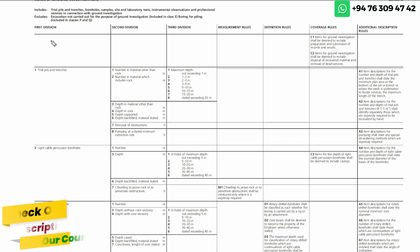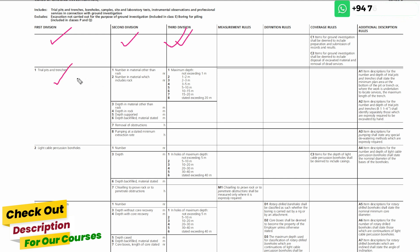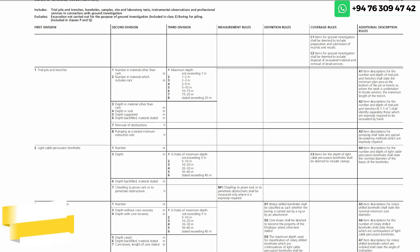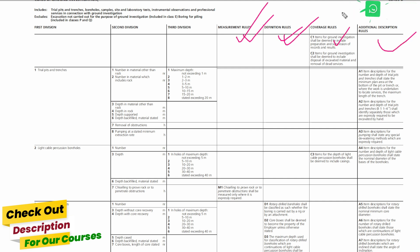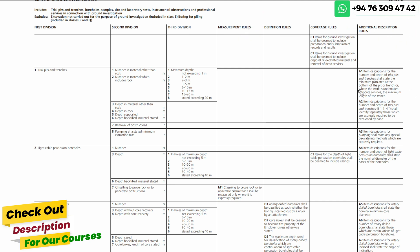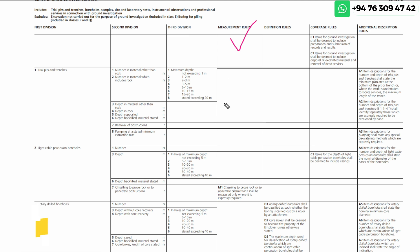In the main section, we have three divisions: first division, second division, third division. We have to cover the first and second division. We have to cover the third division. In the main section, we have four rules: measurement rule, definition rule, coverage rule, and additional description rule. Measurement rules are overriding. We have to cover the details of the measurement rule and definition rule.